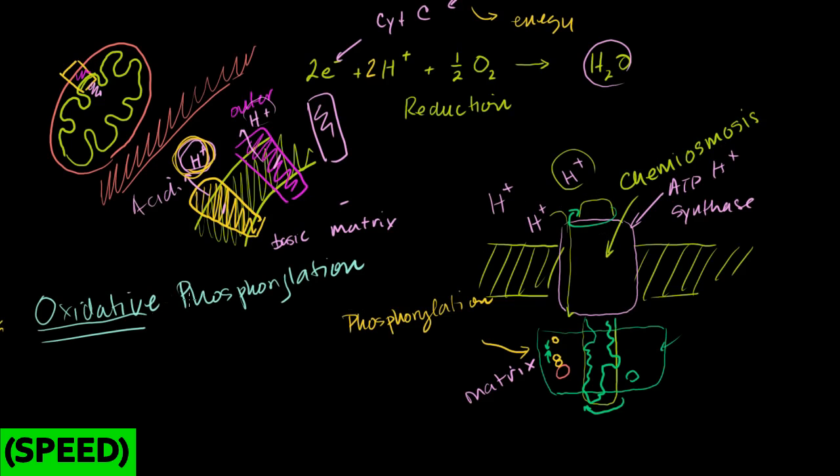So the entire process is called oxidative phosphorylation. They don't happen at the same time. Oxidative generates the energy to push the hydrogens out, and the phosphorylation happens as the hydrogens experience chemiosmosis and go back in and turn this little axle and then push the ADP and the phosphate groups together.